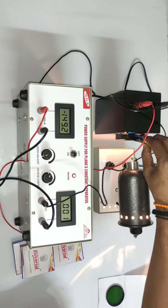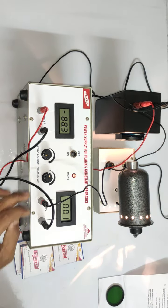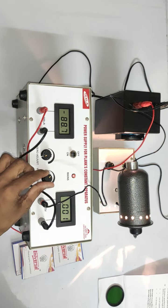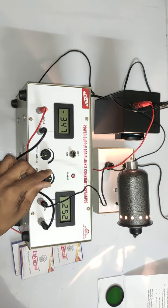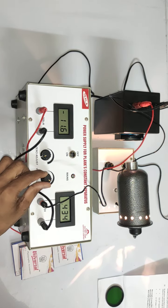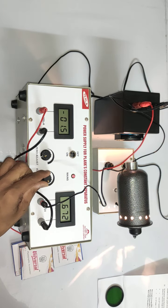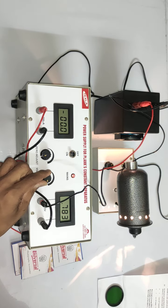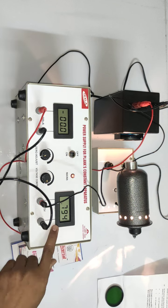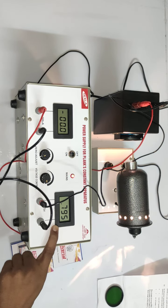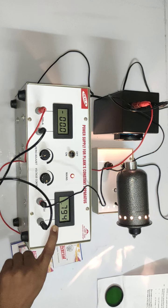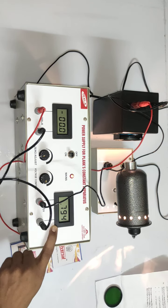Placing the blue filter and again varying the voltage. Wherever the current is getting zero, we note the value of that particular voltage. The stopping potential voltage for blue is 0.794 volts. So we got three values.